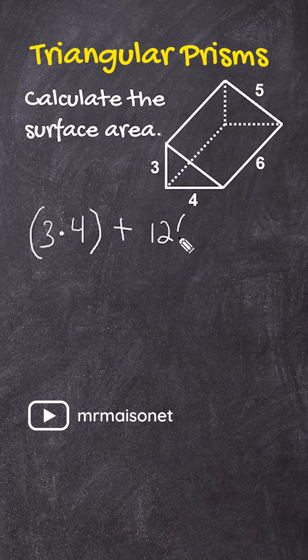And then what we do is we multiply that by the height of the prism, or the distance between the two triangular surfaces, which in this case is 6.